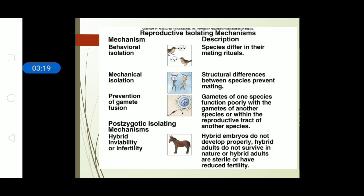The first isolating mechanism is behavioral isolation. This occurs when the mating season or mating pattern of two species is different. Consider two birds whose behavioral approach or attitude toward mating is different — because of this difference in behavior, both birds cannot mate.